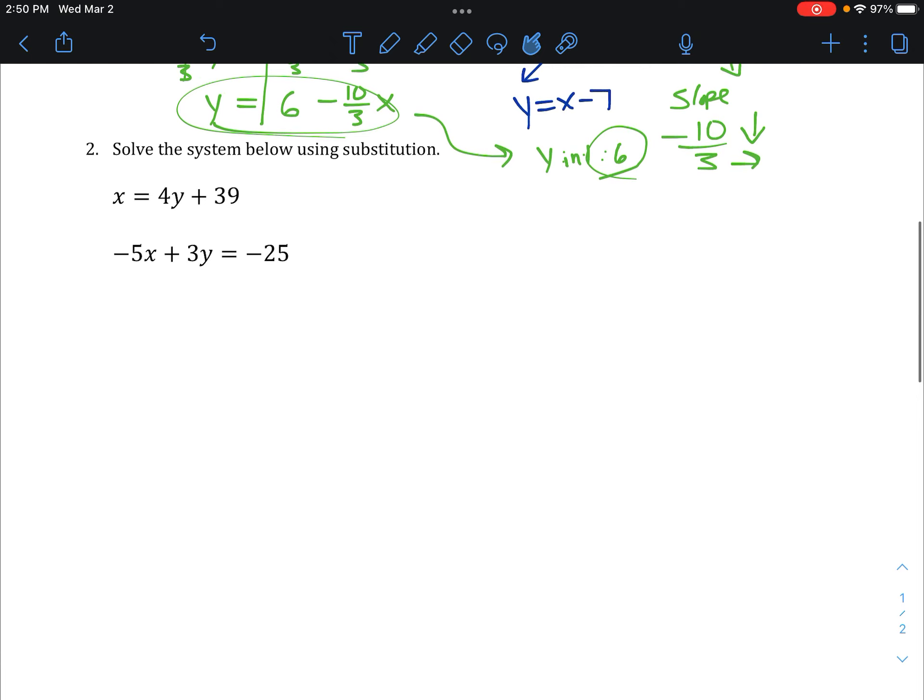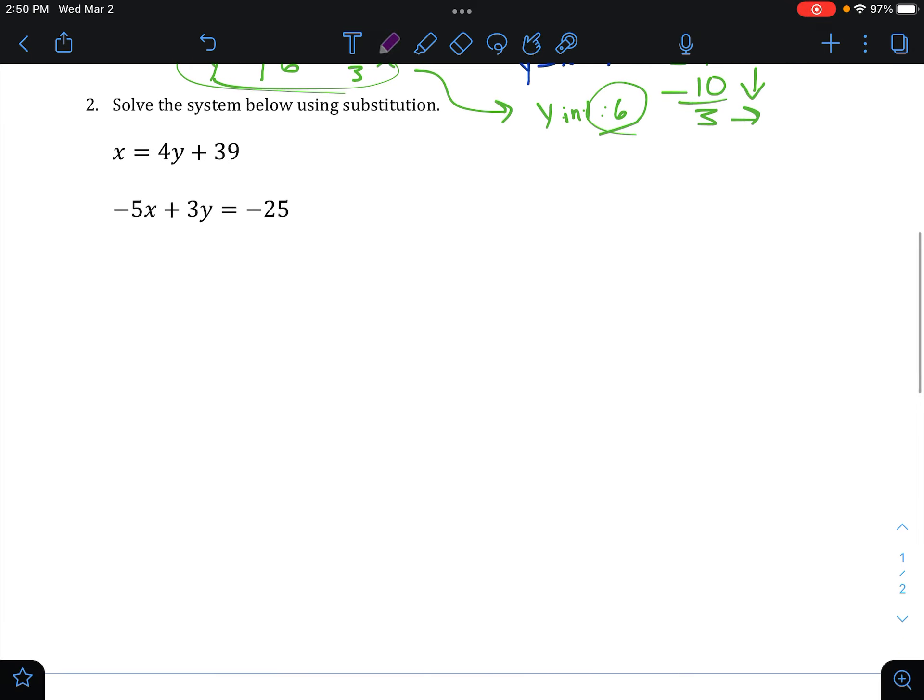The next one we're going to do here, we're going to use substitution. So we're not going to graph it. We're going to use the algebraic method of doing this. What we do for this is we take something that's equal to a variable and put that whole thing in into the other equation, in for that variable. So what I mean by that is, 4y plus 39, that whole thing equals x.